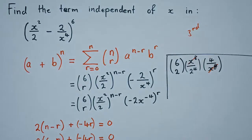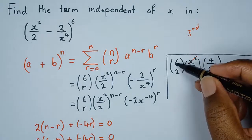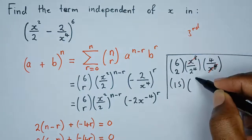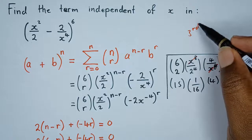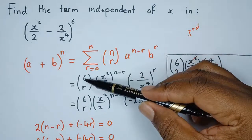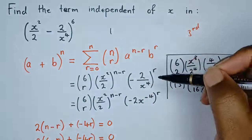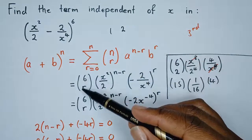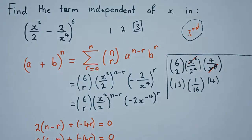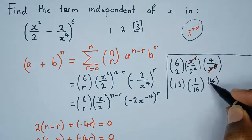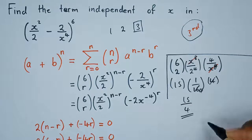The question asks us to find the term independent of x, so we calculate: C(6, 2) is 15, multiplied by 1 over 16, then multiplied by 4. This gives us 15 over 4 as the term independent of x. It is the third term because we start with C(6,0) as term 1, C(6,1) as term 2, and C(6,2) as term 3. That is how we find the term independent of x.